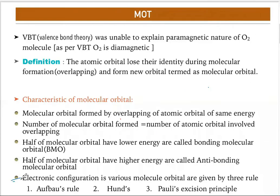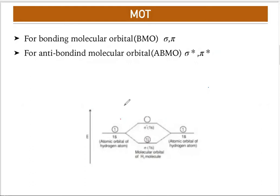Electronic configurations in molecular orbitals are governed by three rules: the Aufbau rule, Hund's rule, and Pauli's Exclusion Principle — all previously discussed in atomic structure. The Aufbau rule says electrons fill orbitals in order of increasing energy. After 1s come 2s, 2p combinations — each set of atomic orbitals forms corresponding BMO and ABMO.